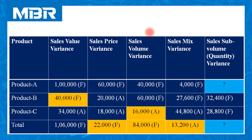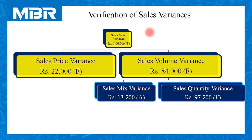Now only two items remain missing: sales sub-volume variance for product A and the total sales sub-volume or quantity variance. Using the variance verification chart: Sales Volume Variance = Sales Mix Variance + Sales Sub-Volume Variance. Sales volume variance is Rs. 84,000 favorable and sales mix variance is Rs. 13,200 adverse.